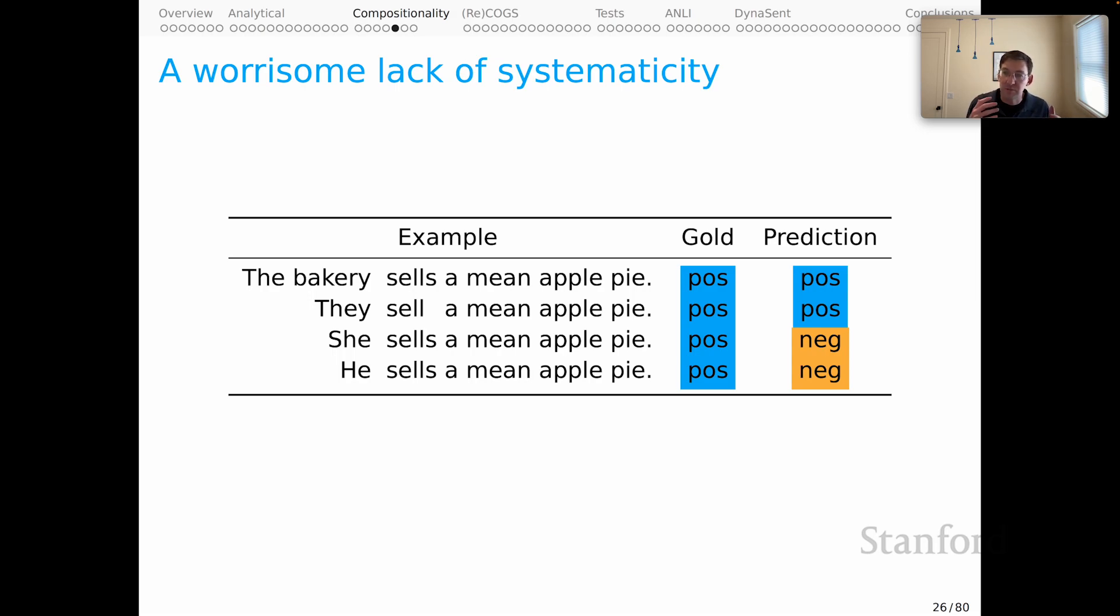And yet, nonetheless, the model's predictions changed. And that manifests for me as a lack of systematicity. And that's a kind of guiding intuition behind many of the adversarial or challenge data sets that people have posed. They have a hypothesis grounded in the systematicity of language. And they observe departures from that in their models. And they begin to worry about those models.